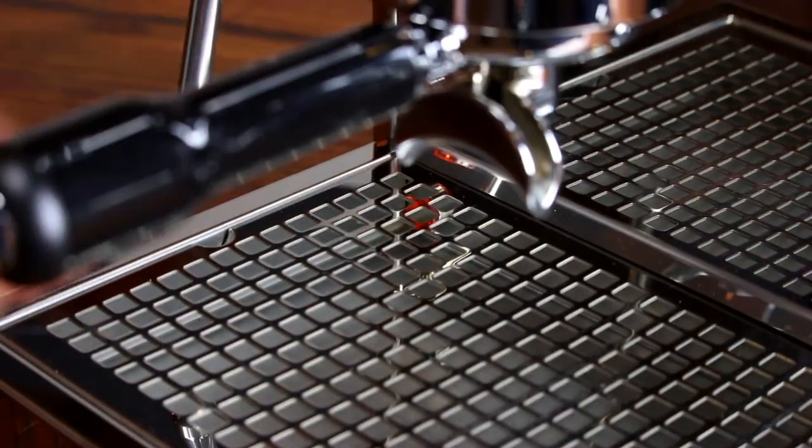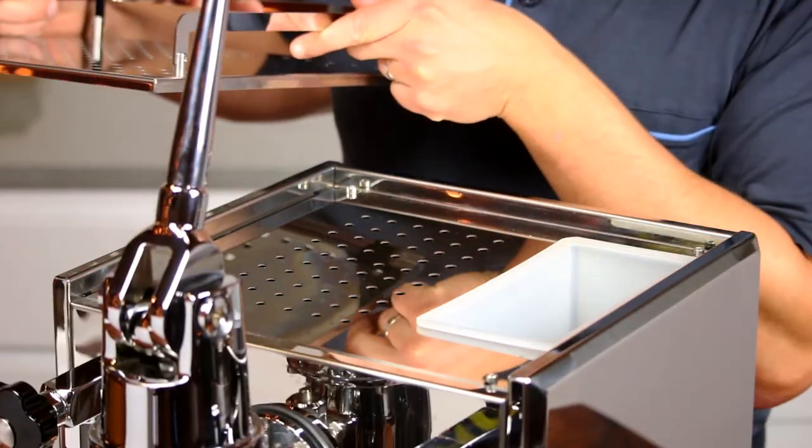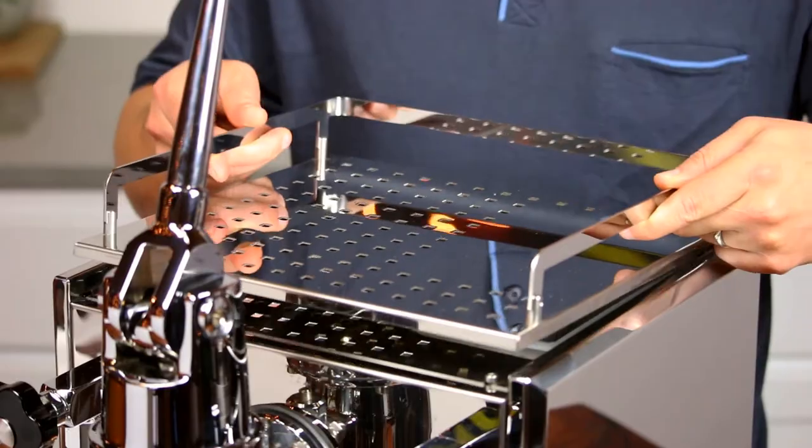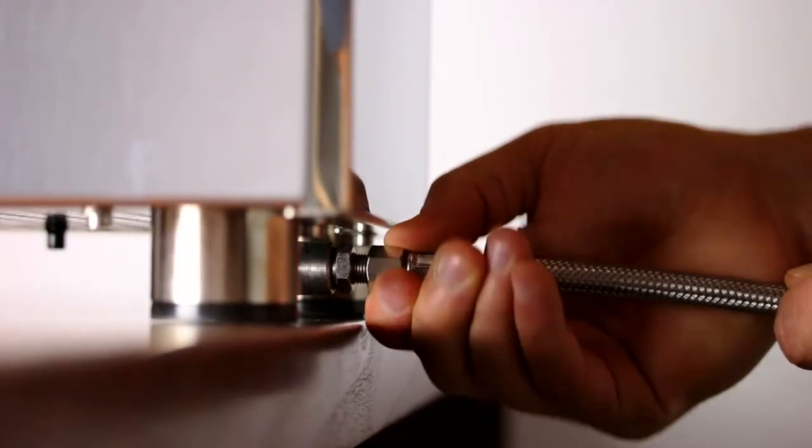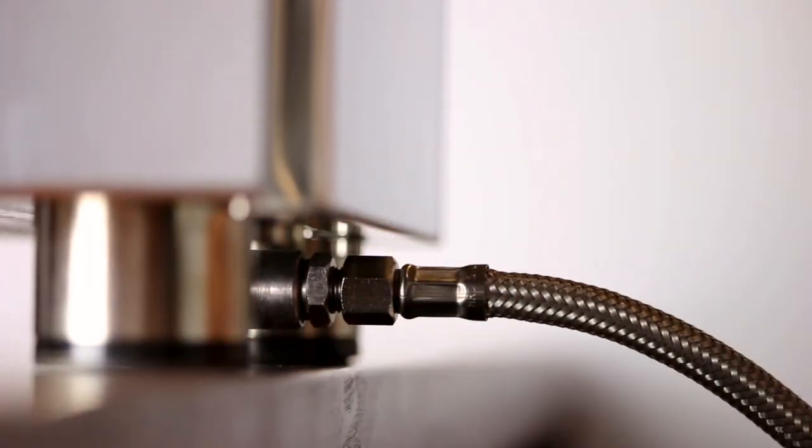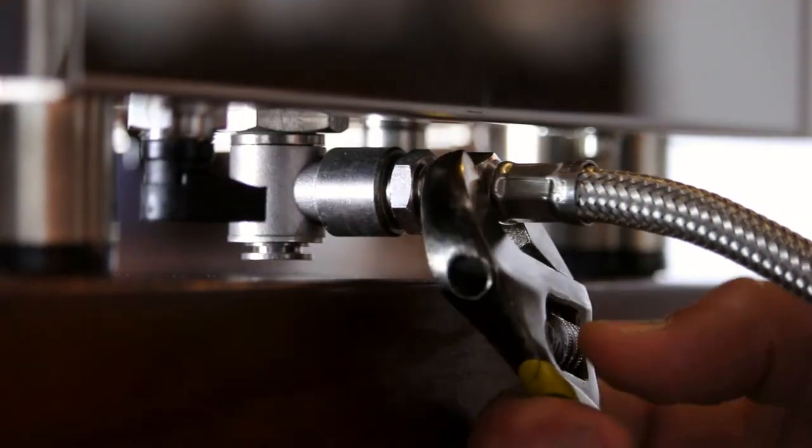Once you have verified your water is adequately softened and filtered, either fill the reservoir with water, or if you are plumbing in the machine, fasten the braided line to the water inlet on the bottom of the machine until hand tight. Then give it a quarter turn using an adjustable wrench.